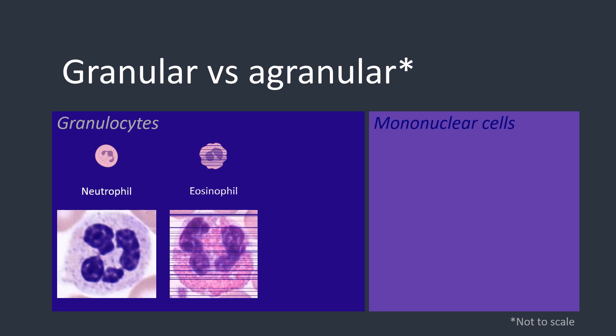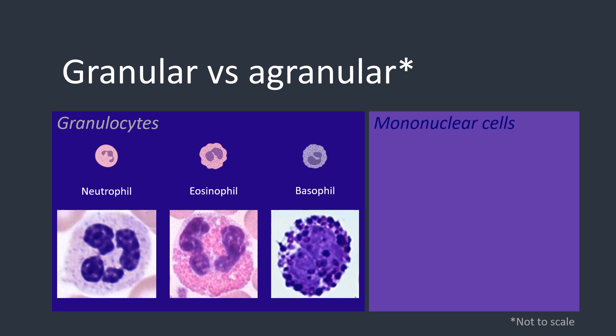Next up we have the eosinophils. Their nucleus normally has two to three lobes, but just like the neutrophil, it can be hypersegmented or hyposegmented in certain conditions. The most distinctive feature is the reddish-orange granules within the cytoplasm — the granules are larger than those in the neutrophil and spherical in shape. The last cell in this category is the basophil, which has deep purple, almost black coloured granules that cover the nucleus. For all three of these cells, changes in granulation can be seen in different conditions.